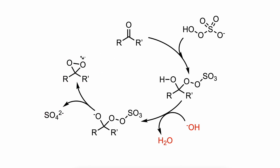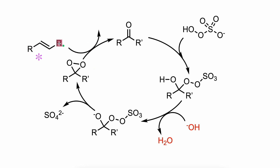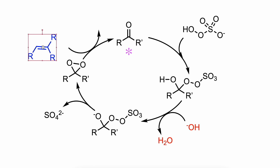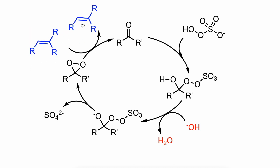This dioxirane derivative then induces the asymmetric epoxidation of the alkene while regenerating the ketone for the next catalytic cycle.